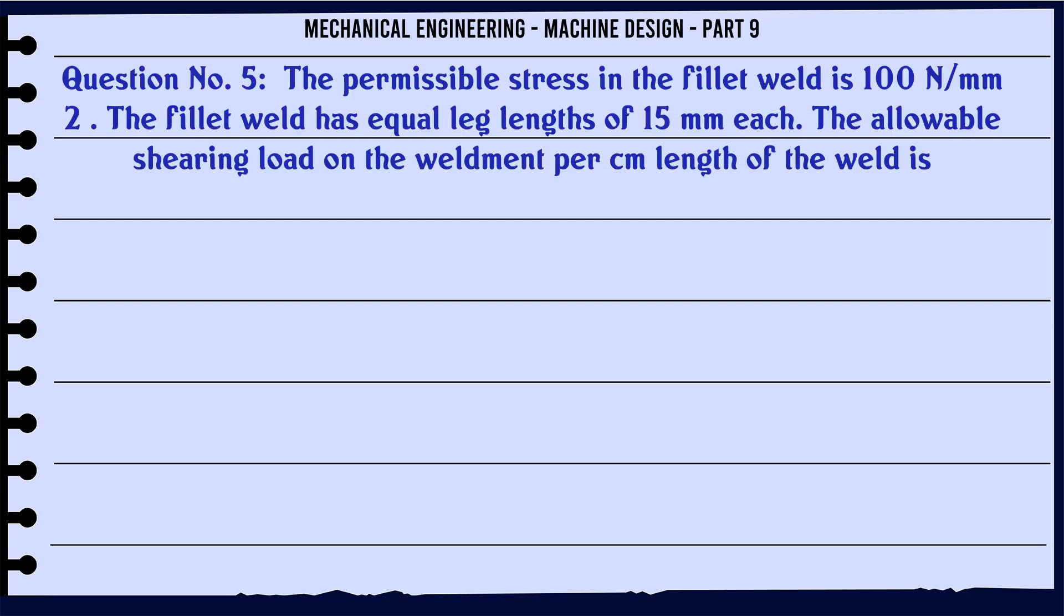The permissible stress in the fillet weld is 100 N/mm². The fillet weld has equal leg lengths of 15 mm each. The allowable shearing load on the weldment per cm length of the weld is: A. 7.5 kN, B. 10.6 kN, C. 15 kN, D. 22.5 kN. The correct answer is 10.6 kN.